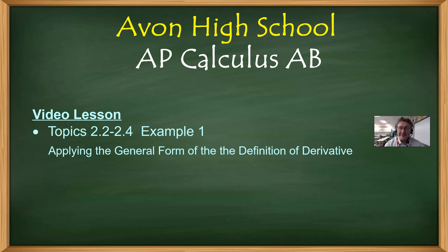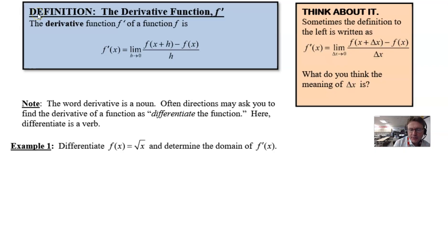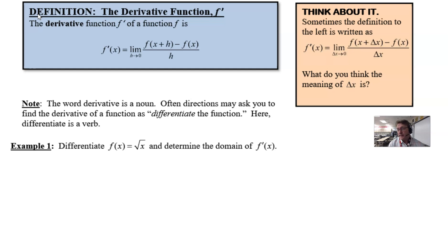Hello AP Calculus AB students, Mr. Record here from Avon High School. This is our second video devoted to topics 2.2 to 2.3, which pretty much cover the definition of the derivative. In the first video we talked about the development of the derivative function f prime — a very powerful limit statement that allows us to compute the slope of the tangent line drawn to a curve. We have the working definition up here in the blue box.